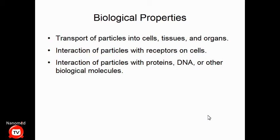Beyond optical and magnetic properties, an area that has emerged in the last five years is tunable biological properties of materials. The transport of a particle into cells, tissues, and organs is strongly dependent on the size, shape, and chemistry of the material. How particles interact with receptors on cells, and how they interact with proteins, DNA, and other biological molecules, are also related to the size, shape, and surface chemistry of the nanostructure.